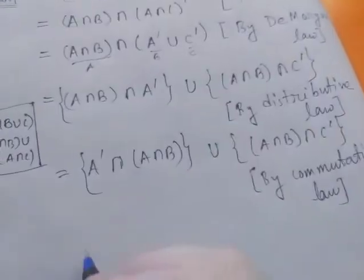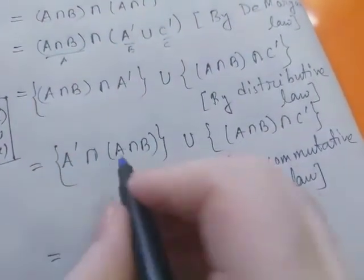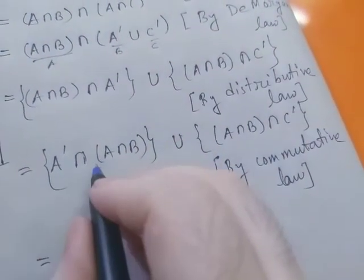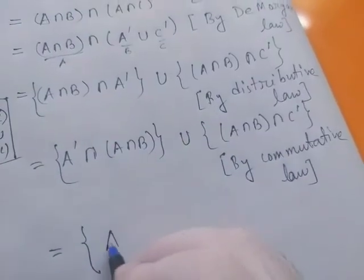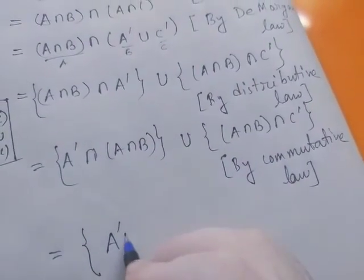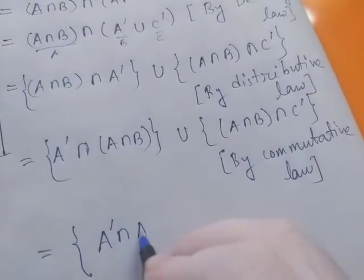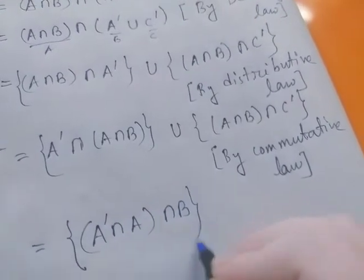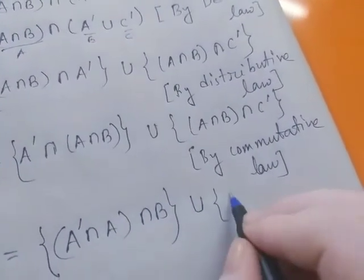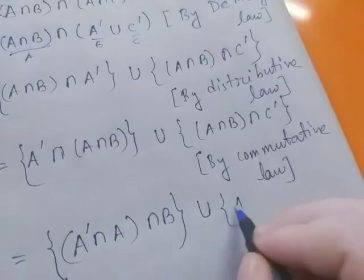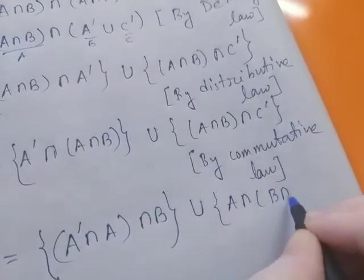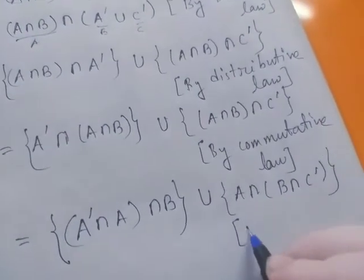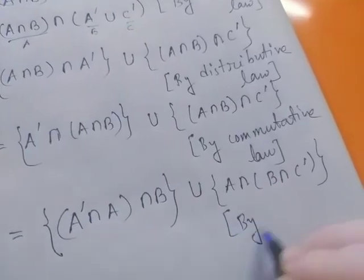Now, using the associative property, we can write this as (A complement intersection A) intersection B, and this will be A intersection B intersection C complement, by the associative law.